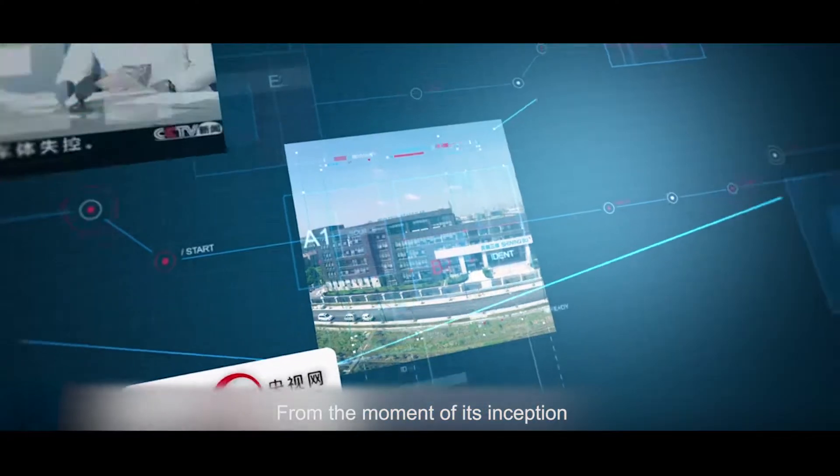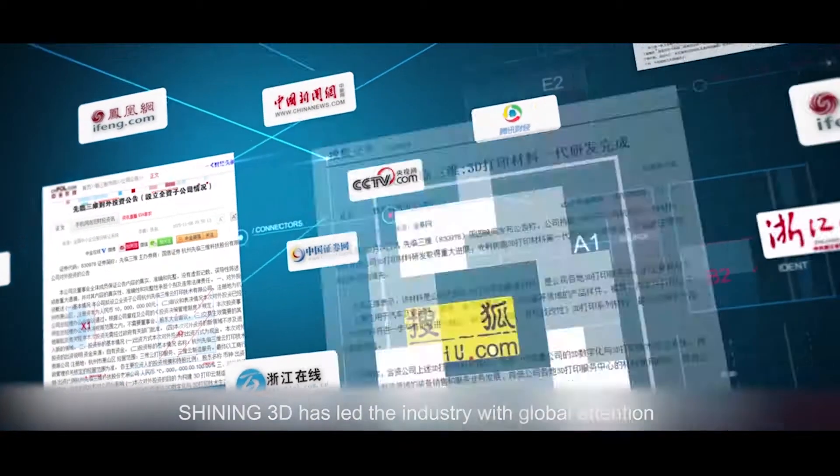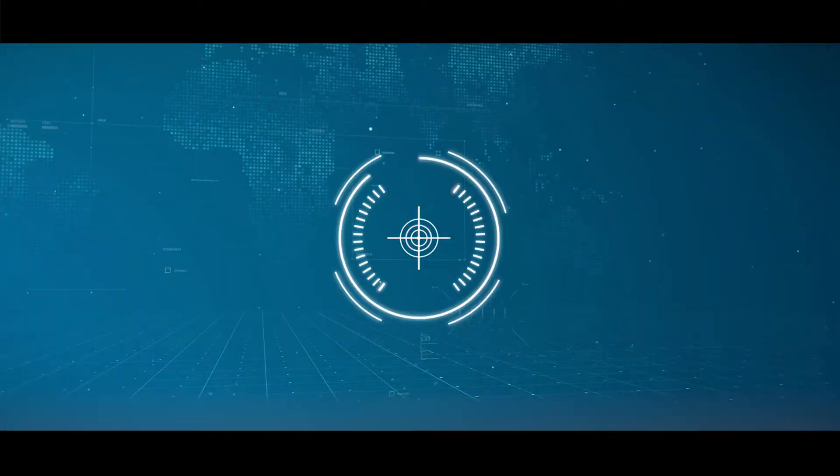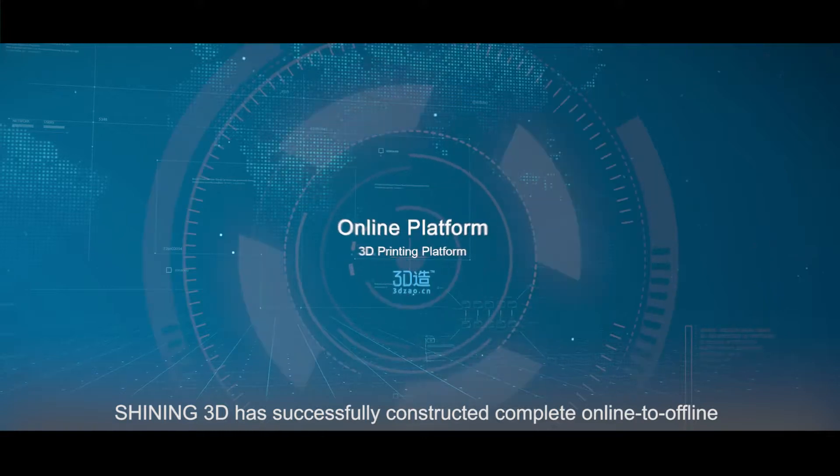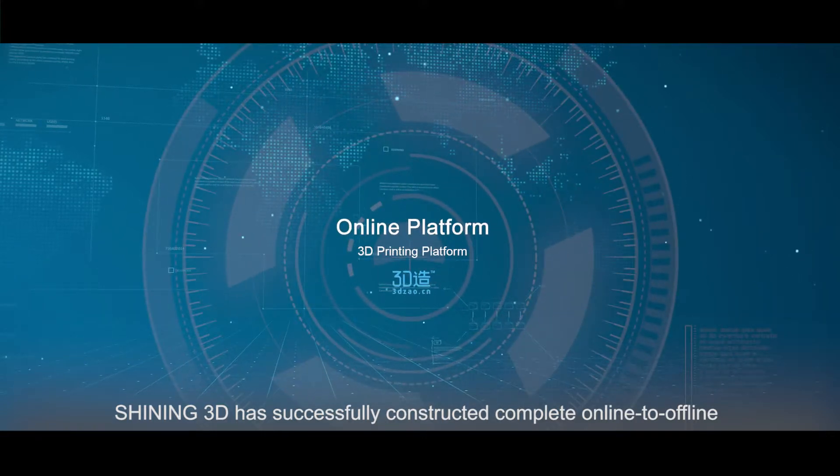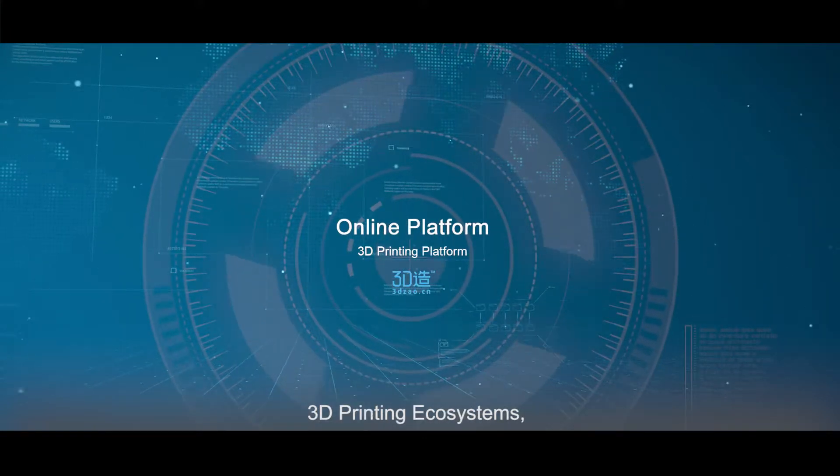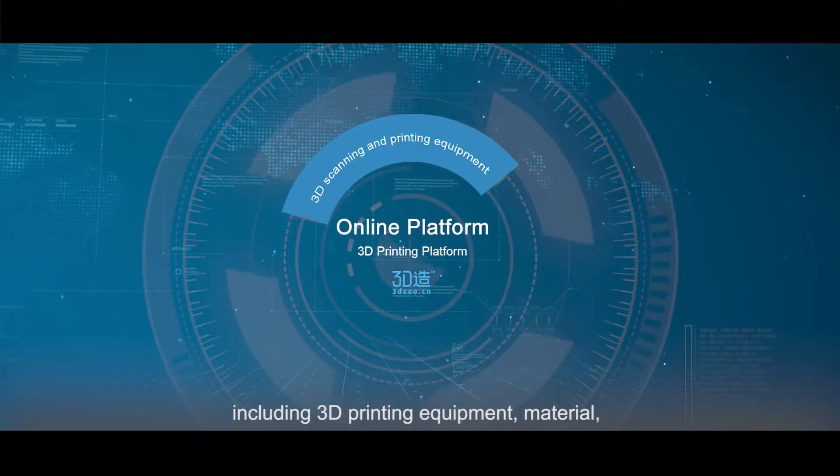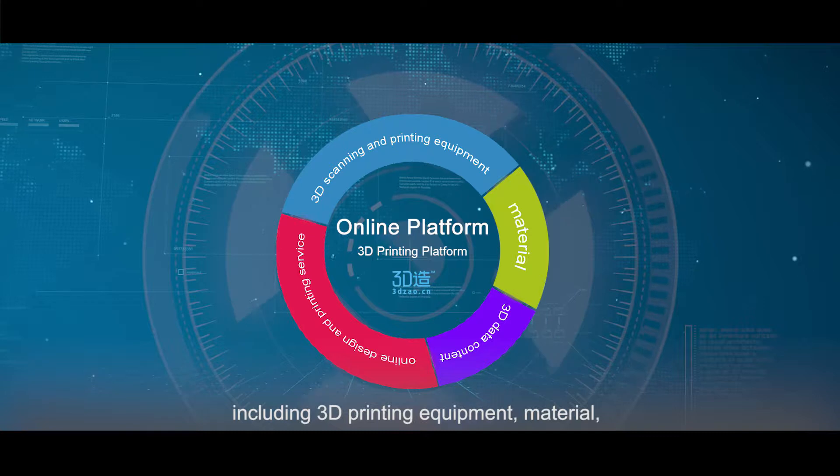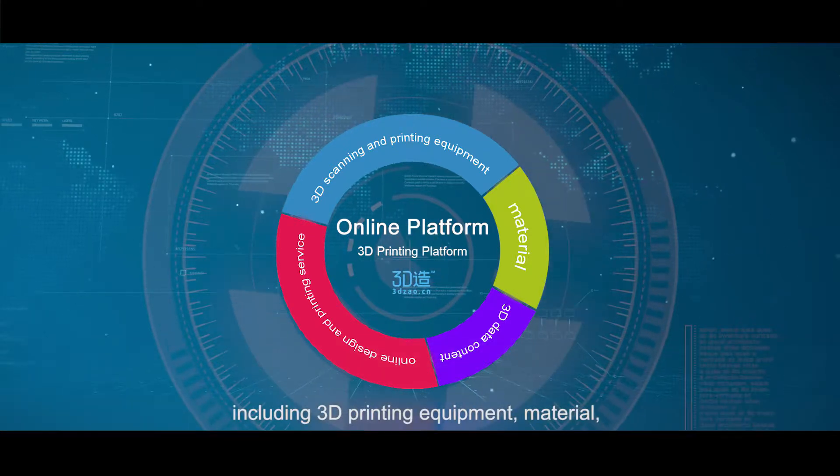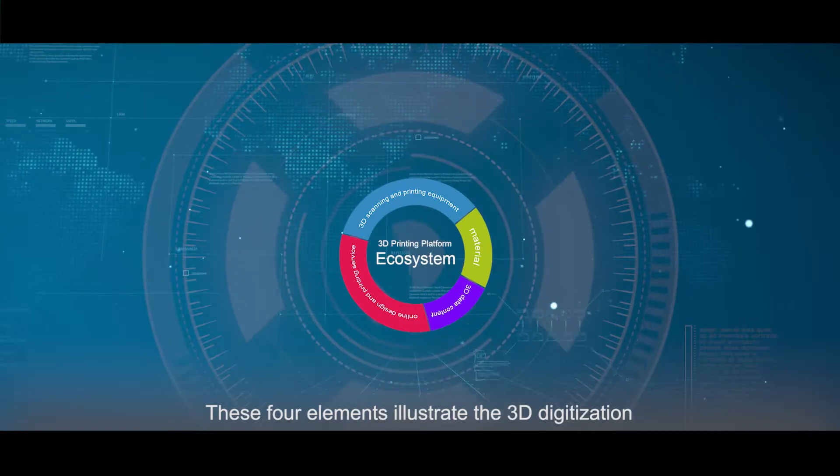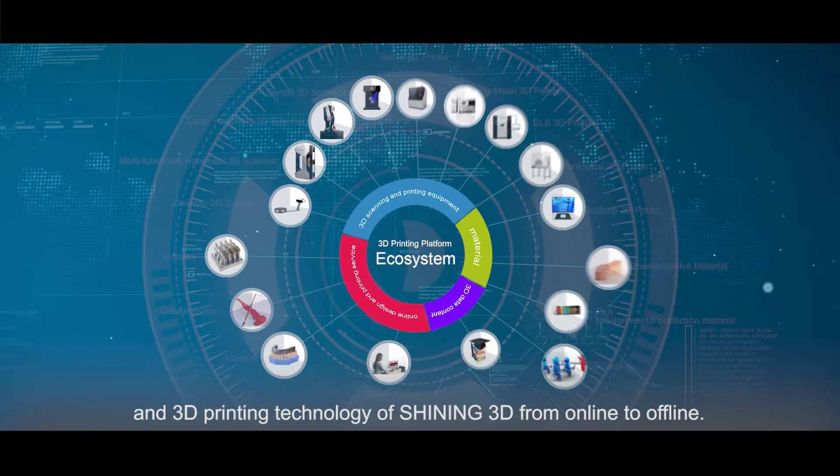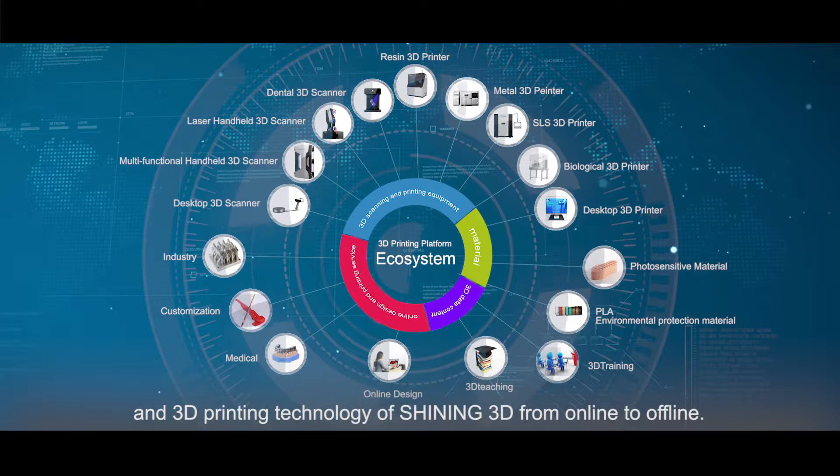From establishment to flourish, Shiny 3D has gained global attention in the industry. The company has successfully constructed a complete online-to-offline 3D printing ecosystem, including internet plus, 3D printing equipment, material, data, and service. These four elements illustrate Shiny 3D's 3D digitization and 3D printing technology from online to offline.